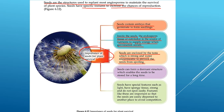Seeds can form a dormant structure which enables them to be stored for a long time until conditions become favorable. Seeds also have special features such as being light, having spongy tissue, and being strong and not spoiling easily. These features are important so that seeds are easily dispersed to another place, which also avoids competition.